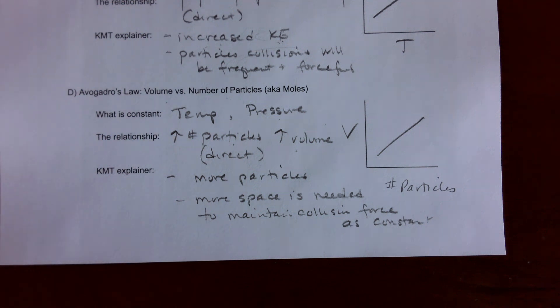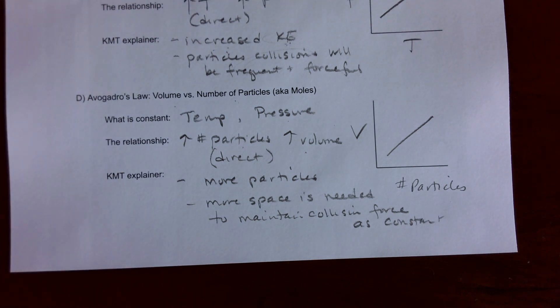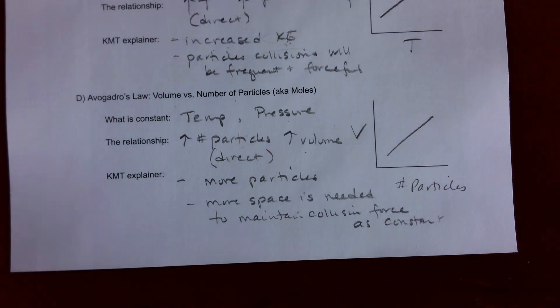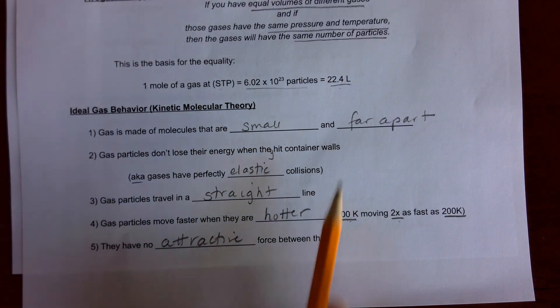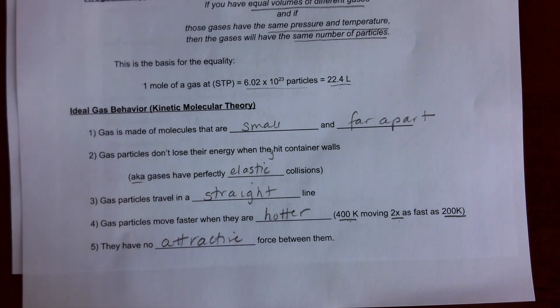In this lesson, we learned about Avogadro's hypothesis: equal volumes of different gases at the same pressure and temperature contain the same number of particles. We then discussed ideal gas behavior and used kinetic molecular theory to explain the relationships between pressure, volume, and temperature of an ideal gas. Thanks so much — we'll see you back in the classroom.